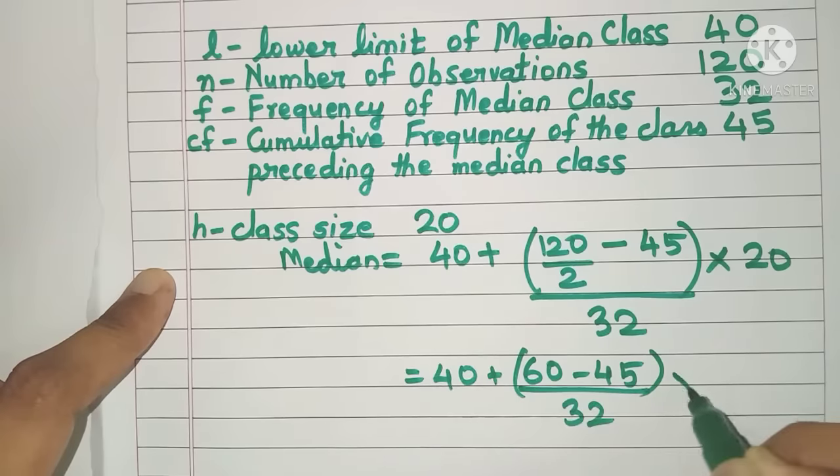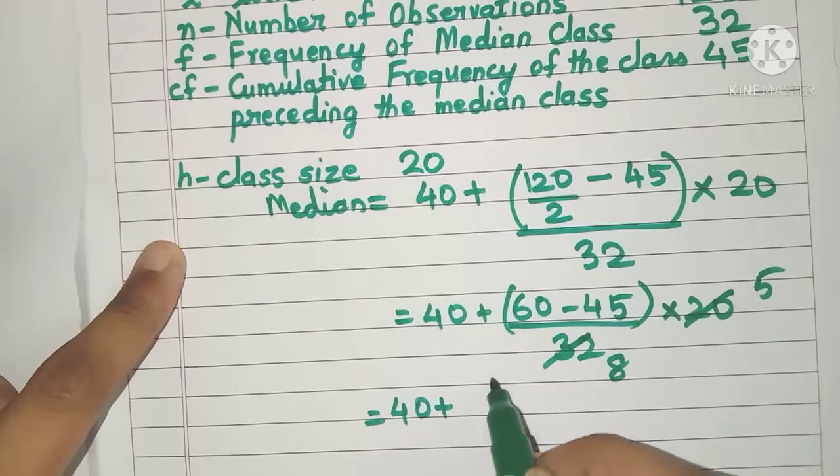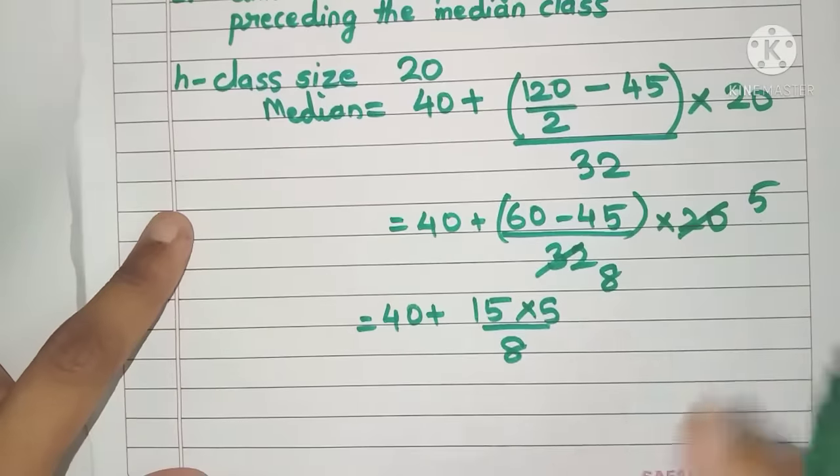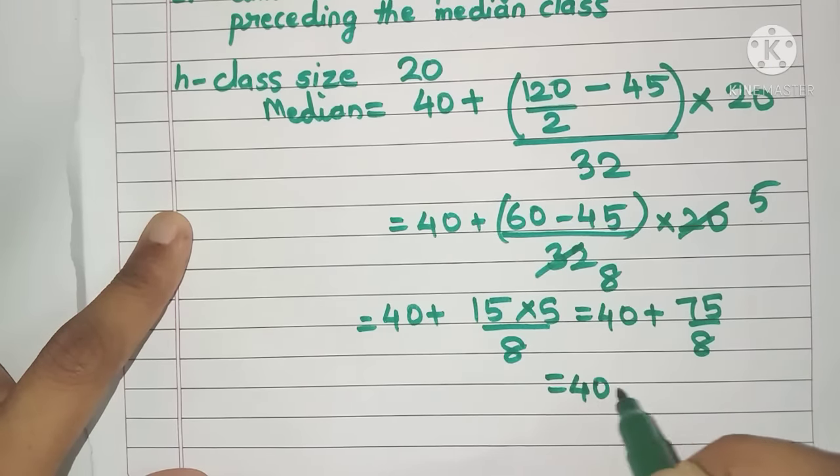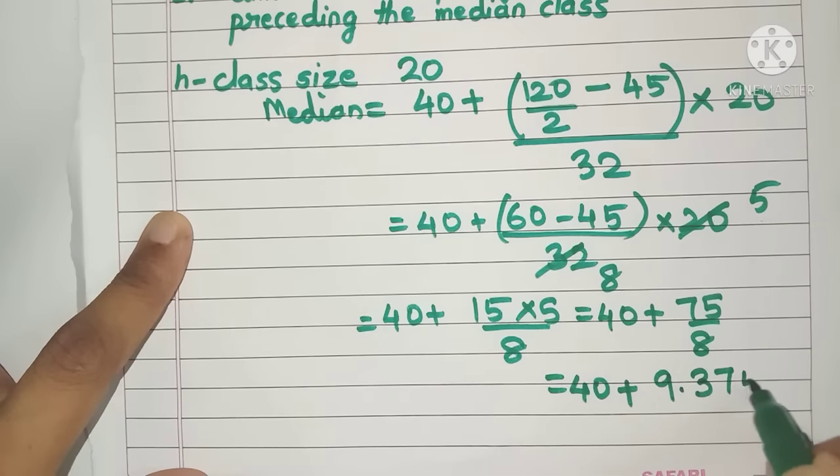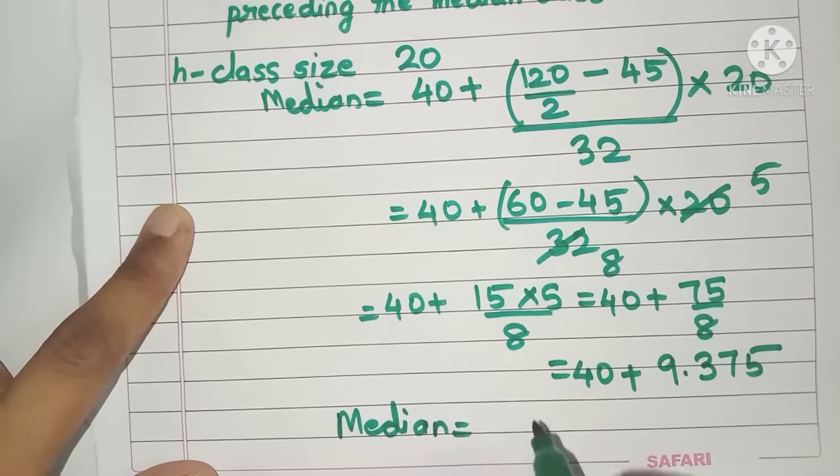We'll get 60 minus 45, keep the bracket, 32 into 20. 4 5s are 20, 4 8s are 32. So we will get 40 plus this will become 15 into 5 upon 8. If I simplify this I will get 75 upon 8 and this on further simplification gives 9.375, which means my median value is 49.375.